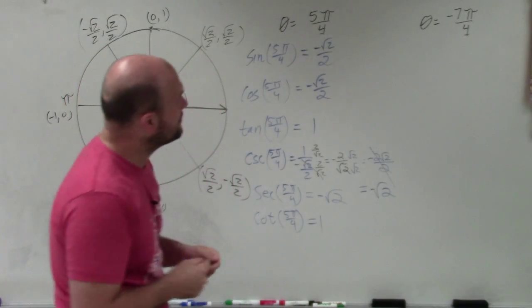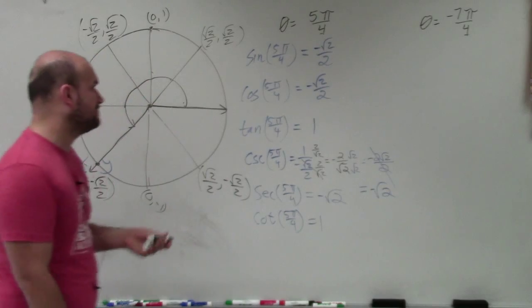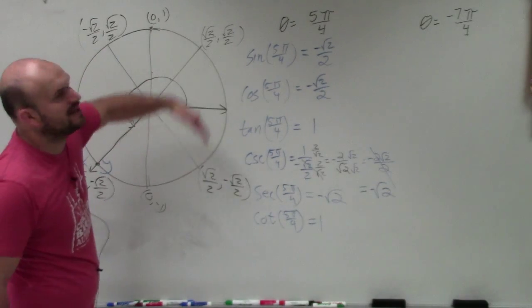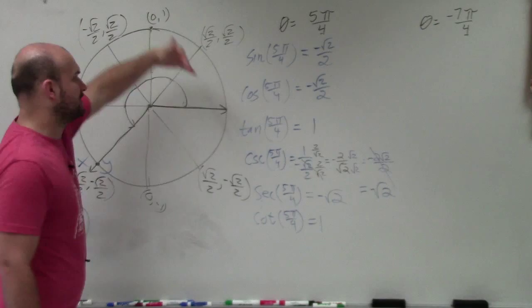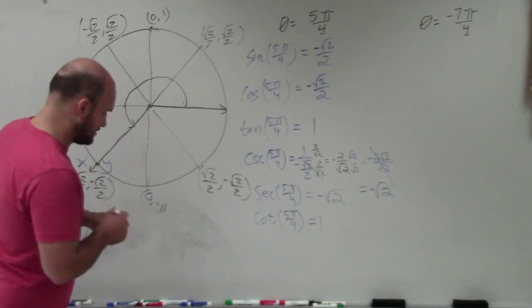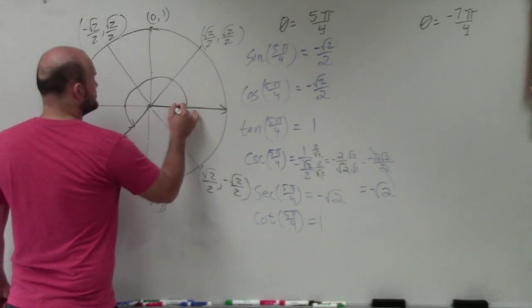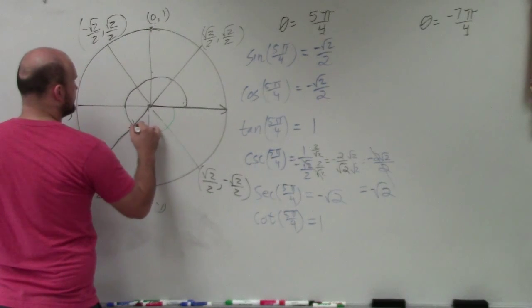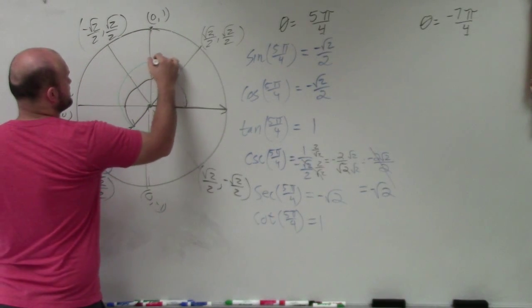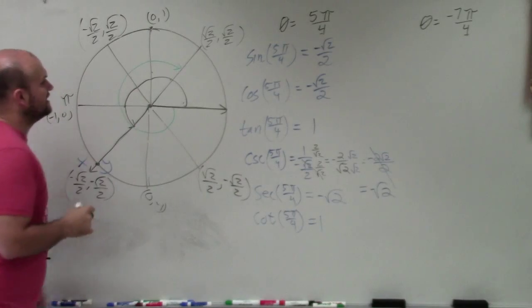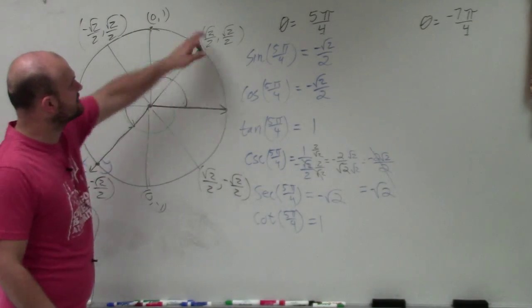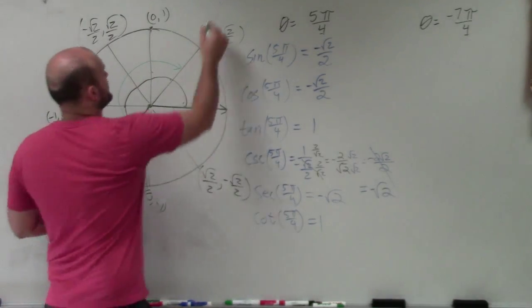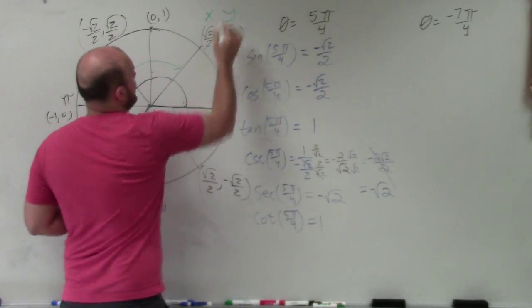Now let's move to our next angle: negative 7 pi over 4. In the positive direction we go counterclockwise, so for a negative angle we go clockwise. Counting: negative pi over 4, negative 2 pi over 4, negative 3 pi over 4, continuing to negative 7 pi over 4. This lands us at the point square root of 2 over 2, square root of 2 over 2 — both coordinates positive.